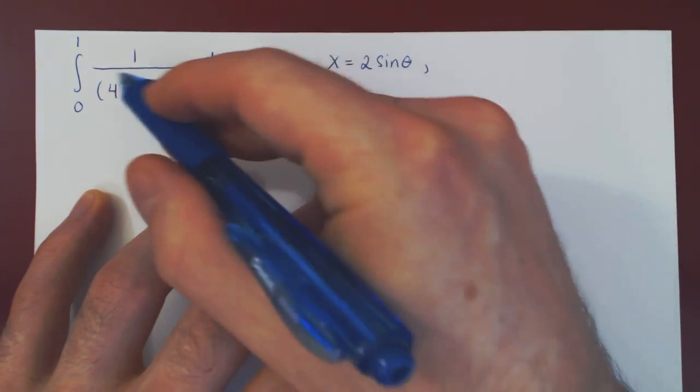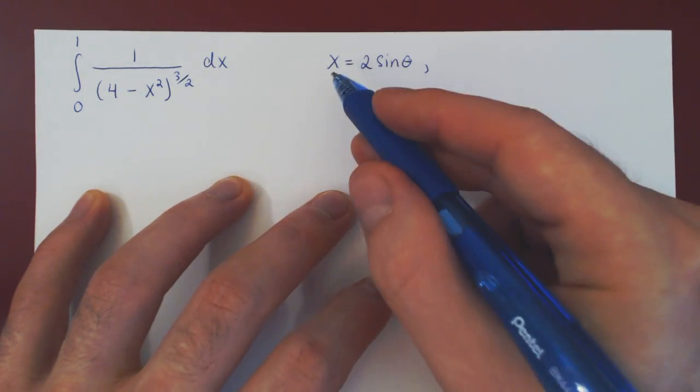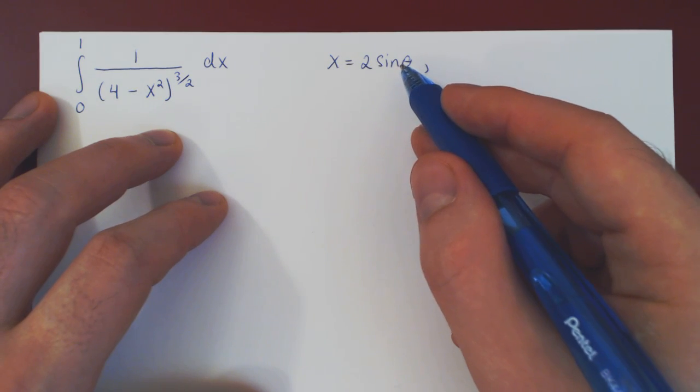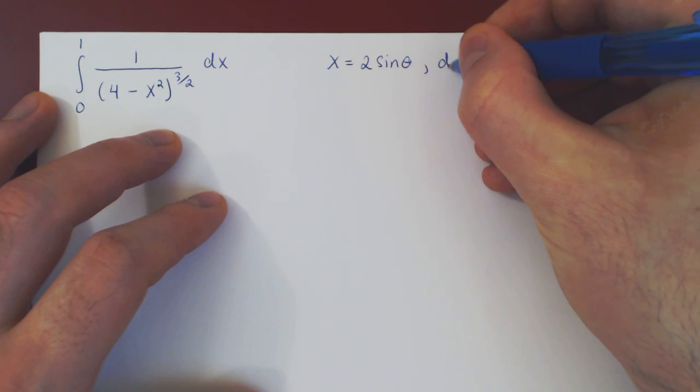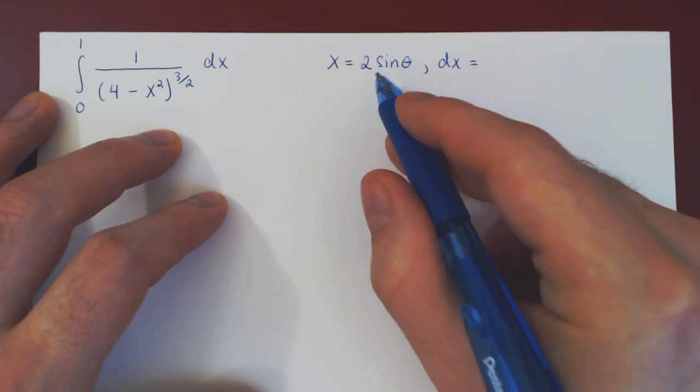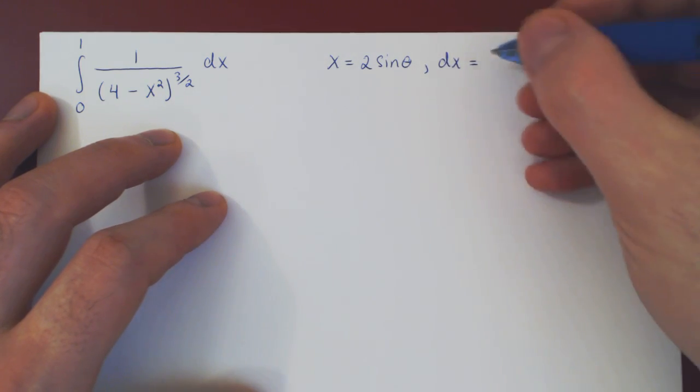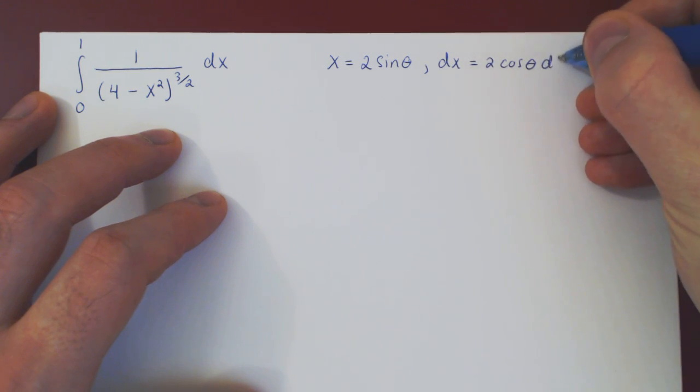Of course, we need our differential, dx. Well, so x equals 2 sine theta, so take the differential on both sides. The differential of x, of course, is dx, equals the differential of 2 sine theta will be 2 cos theta times, of course, d theta.